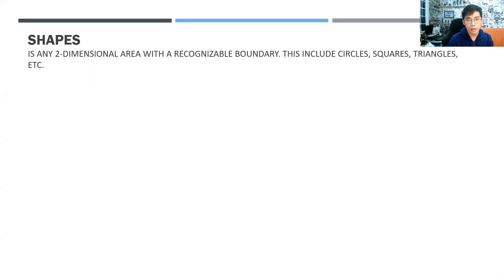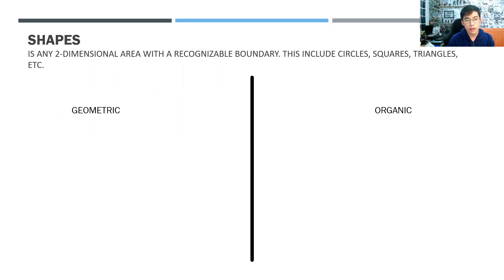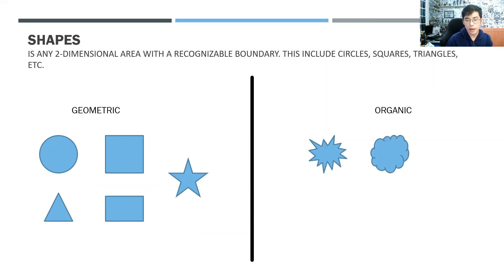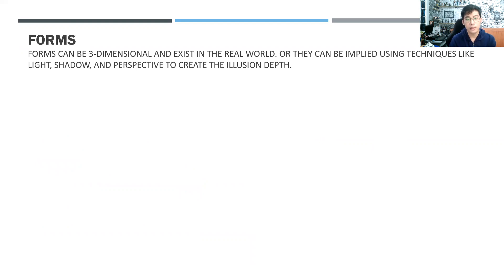For shapes, a two-dimensional area with a recognizable boundary includes circles, squares, triangles, rectangles, stars, and so on. There are two types: geometric and organic. Geometric shapes are the common ones — circles, squares, triangles, rectangles, stars — they have defined edges and we immediately recognize them. Organic shapes are freestyle — they have no accurate measurement and are placed freely as shapes.